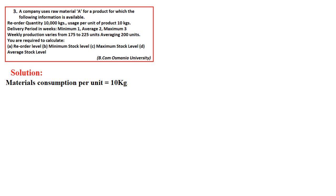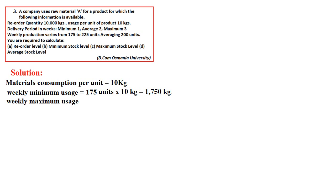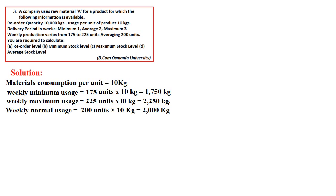To convert: weekly minimum usage = 175 units × 10 kgs per unit = 1,750 kgs. Weekly maximum usage = 225 units × 10 kgs = 2,250 kgs. Weekly average usage = 200 units × 10 kgs = 2,000 kgs. Conversion of data is very important — we must align units. Here, the reorder quantity is 10,000 kgs, and per-unit material requirement is 10 kgs, so we convert production units into kgs.